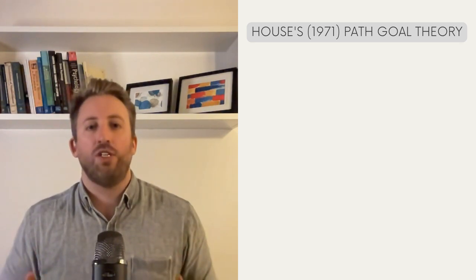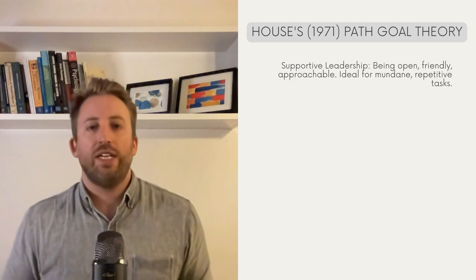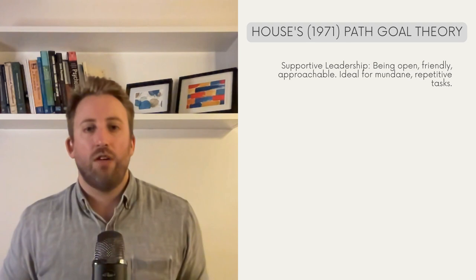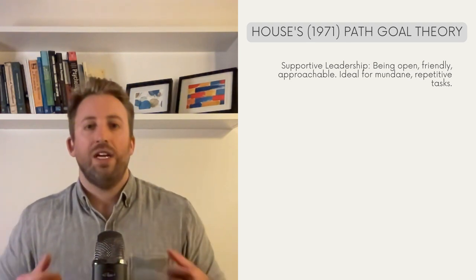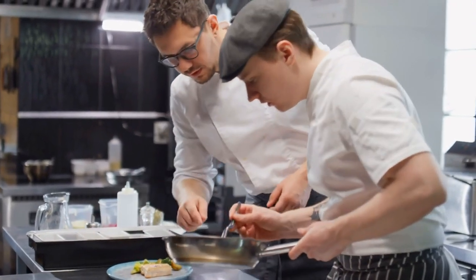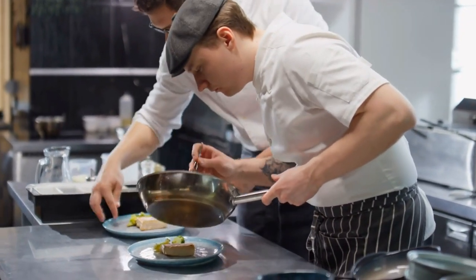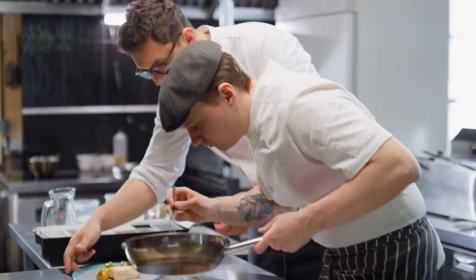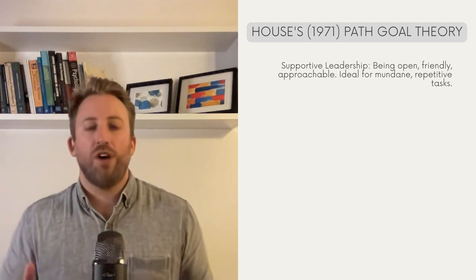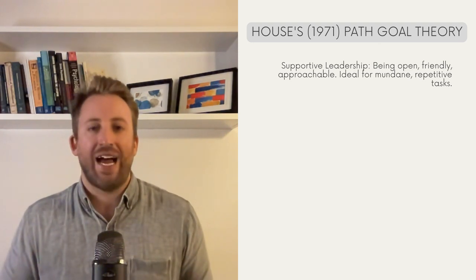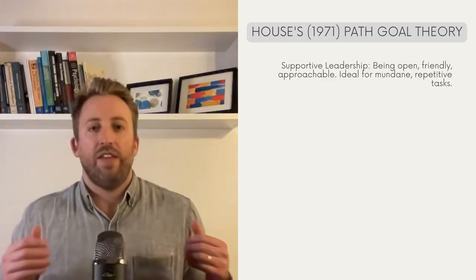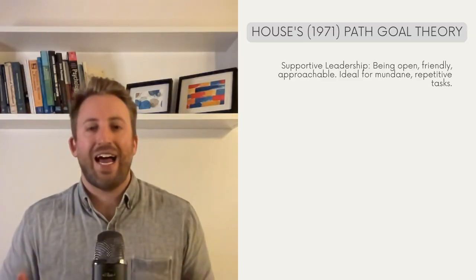You find that different leadership styles can help you effectively manage your diverse team. First, we have supportive leadership, which maps onto the relationship focus. It involves showing concern for your followers, being open, friendly, and approachable. As a restaurant manager, this means you're not just giving orders from your office, but are out on the floor asking your staff how they're doing and offering help when they're overwhelmed. This style is most appropriate when the team is stuck with repetitive and less appealing tasks — say, peeling kilos of potatoes or cleaning up at the end of the day. Their encouragement makes mundane tasks bearable.